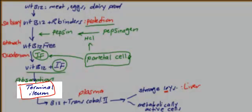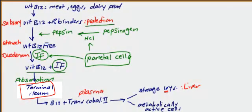After absorption, you will have B12 and transcobalamin 2 in the plasma. From the plasma, vitamin B12 either goes to cells or to storage in the liver. Now, why am I telling you all of this? Because there are specific causes behind each step, and we're going to talk about those causes in detail.